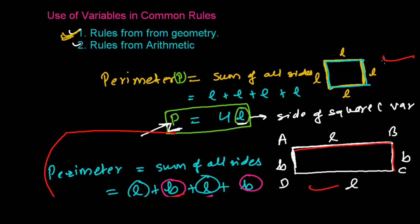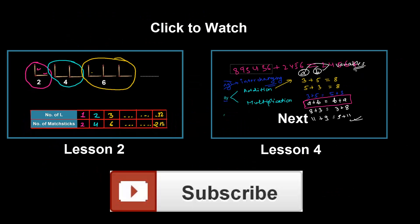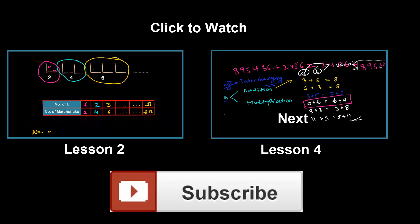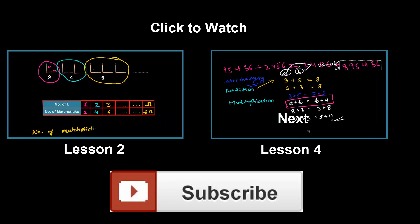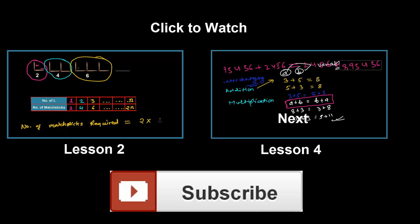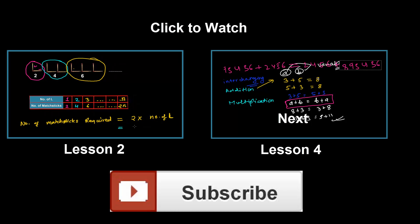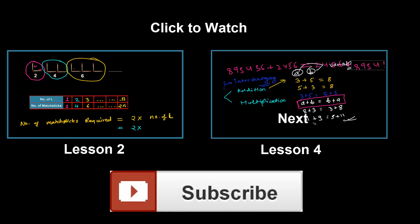Algebra is used in geometry as well as in every aspect of life. In future, suppose you become an architect or an engineer — algebra is going to help you. It's very powerful. I'll talk about the rules of arithmetic in the next video. You can also interchange numbers and variables, and when you write arithmetic rules in the form of variables, that simplifies things greatly.